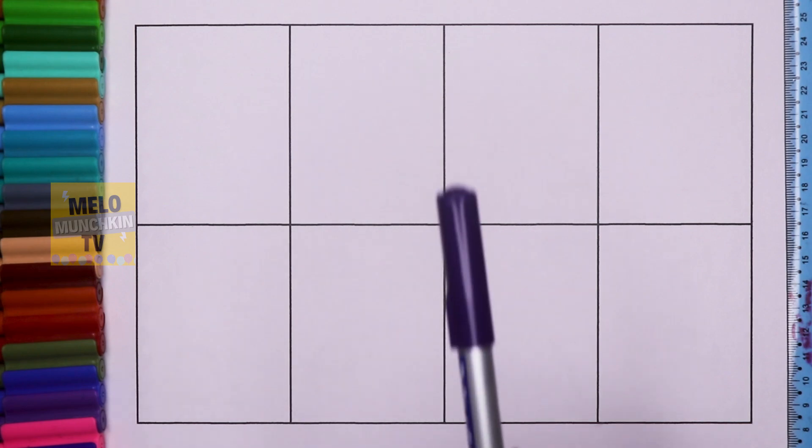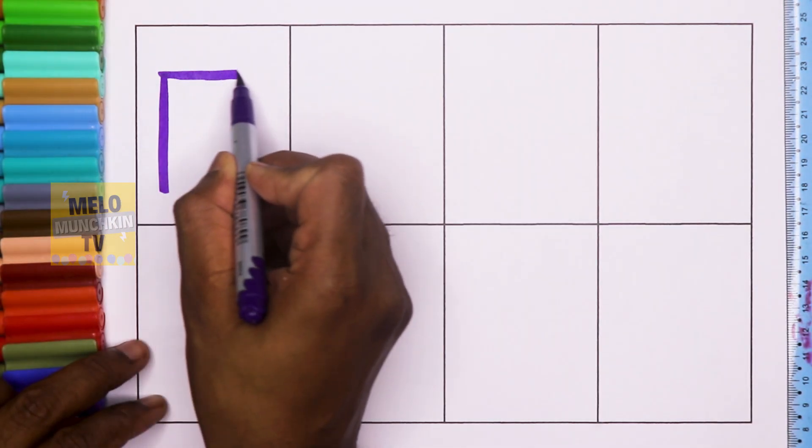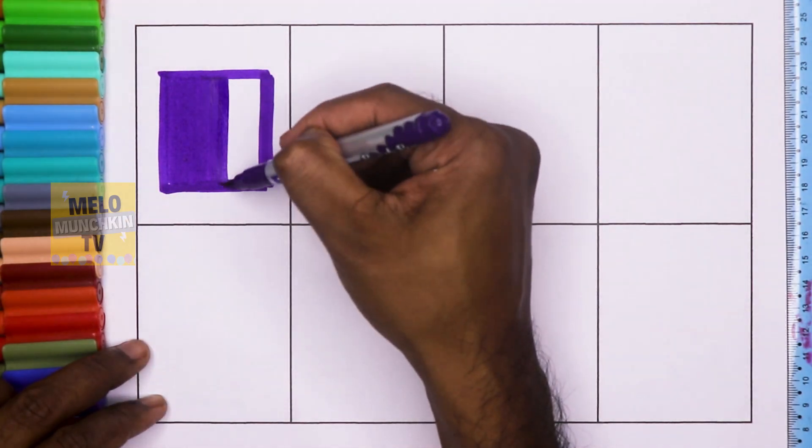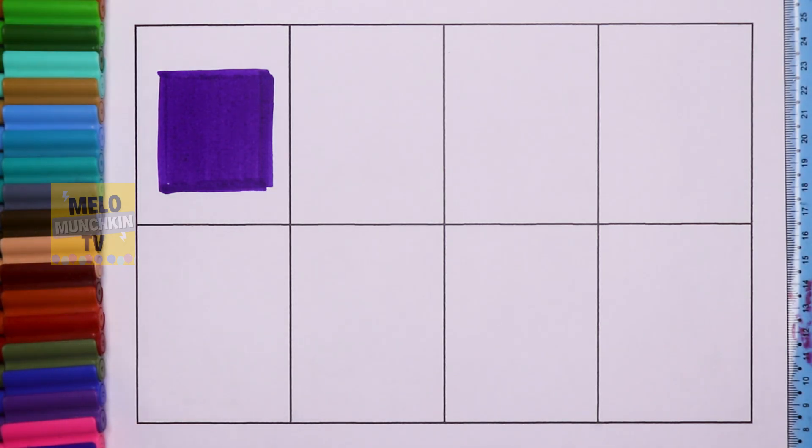Let's get started. First I'll take purple color to draw a square. This is square. Next I'll take orange color to draw a circle.